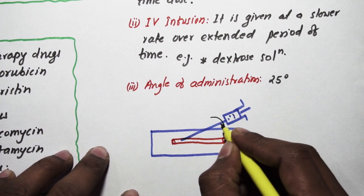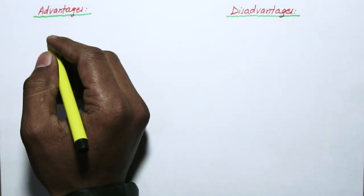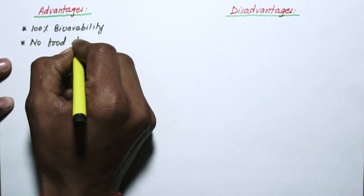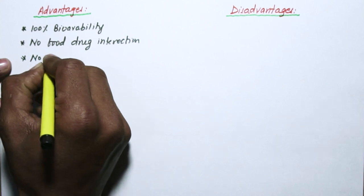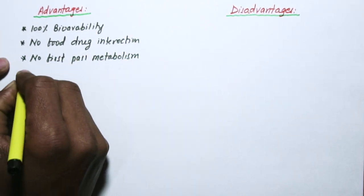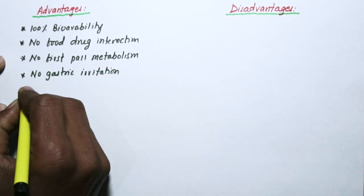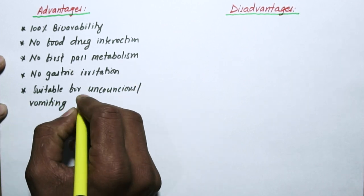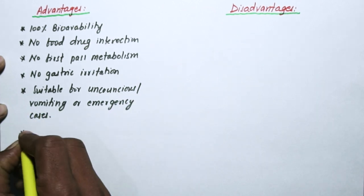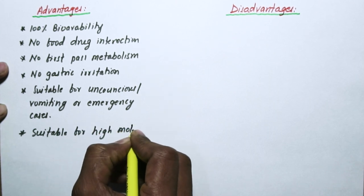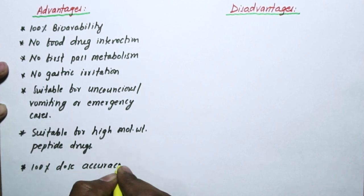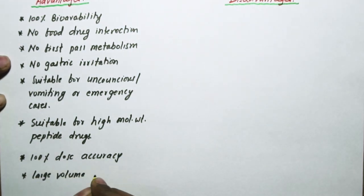Coming to advantages of intravenous route: it has 100% bioavailability because no drug is destroyed, so no food-drug interaction, no first-pass metabolism as drug does not go through the GIT, no gastric irritation, suitable for unconscious or vomiting or emergency cases, suitable for high molecular weight or acid-peptide drugs, 100% dose accuracy, large volume of drug can be administered, and quick onset of action.